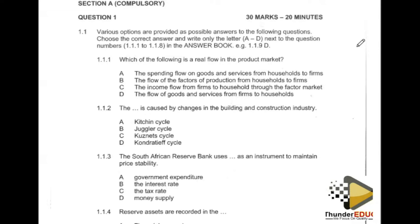Let's check the options. Option A — the spending flow on goods and services from households to firms — is out. Option B — the flow of factors of production from households to firms — is out. Option C — the income flow from firms to households through the factor market — is out. That leaves us with D: the flow of goods and services from firms to households. Since the product market is the platform where goods and services are bought and sold, D is the correct answer.